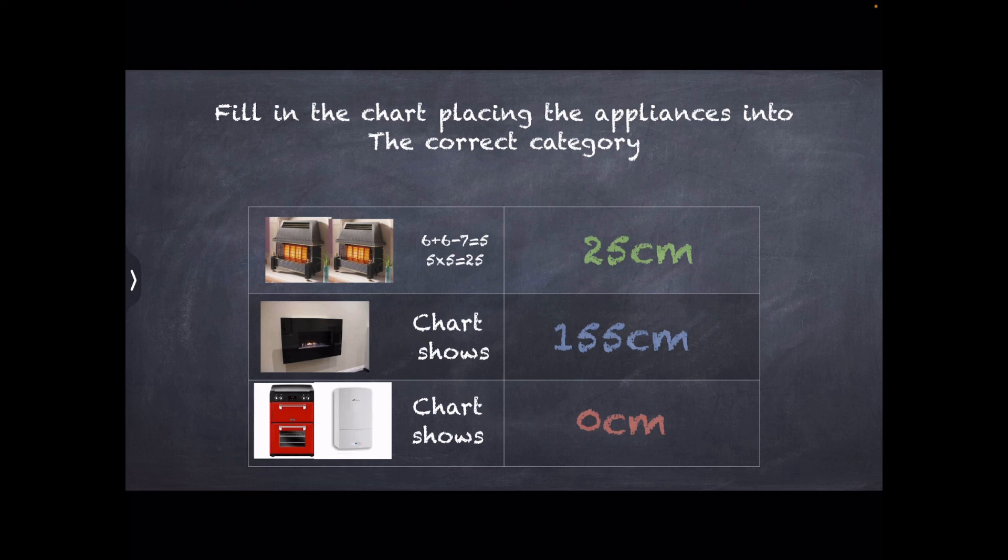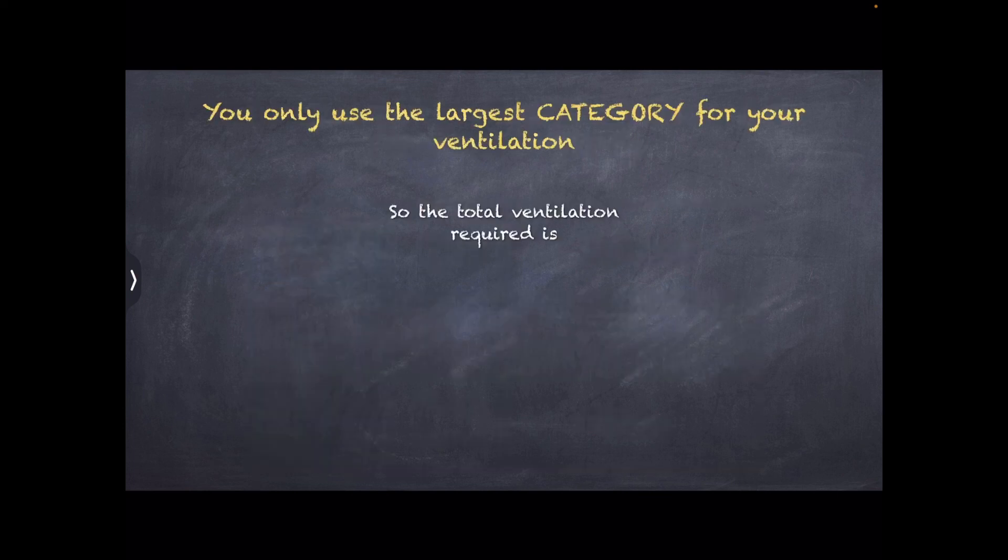That's your basic chart showing you how much ventilation is required for each category. Not for each appliance, for each category. The largest one of these is the flueless space heater category. So, and here's the bit that confuses everybody: you only use the largest category for your ventilation.